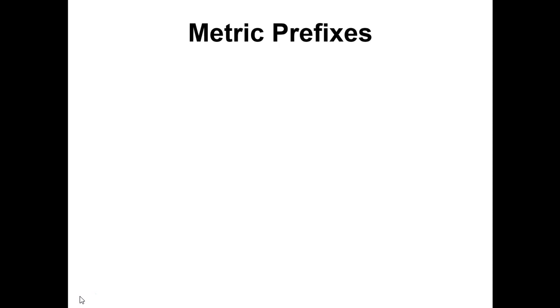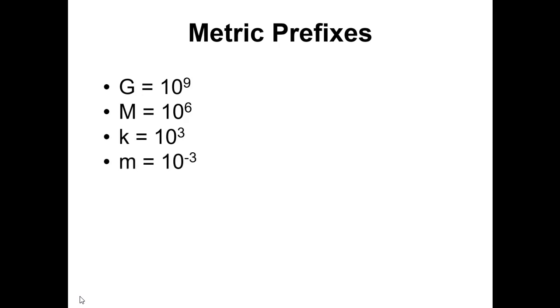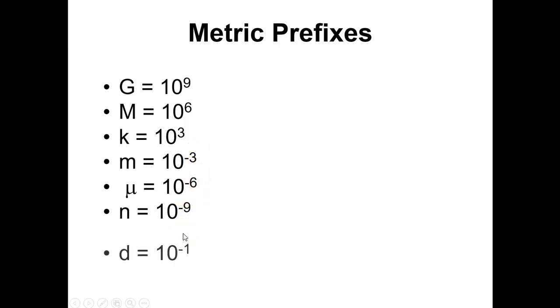The metric prefixes — again, from the boot camp slides. Here are the ones you need to have memorized: G for giga means 10 to the ninth, or 1 billion. M for mega means 10 to the sixth, or 1 million. K for kilo means 10 to the third, or 1,000. Milli means 10 to the minus third. Micro means 10 to the minus sixth. Nano means 10 to the minus ninth. Two additional prefixes that don't fall in the scale of three: deci, which means 10 to the minus one, or one tenth; and centi, which is 10 to the minus two, or one hundredth.